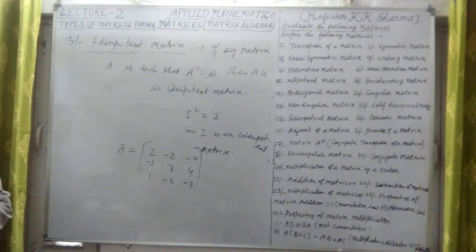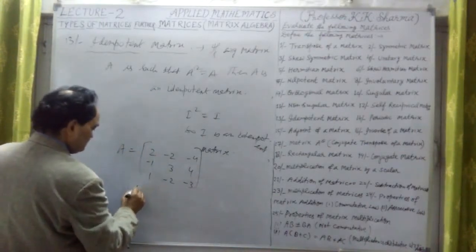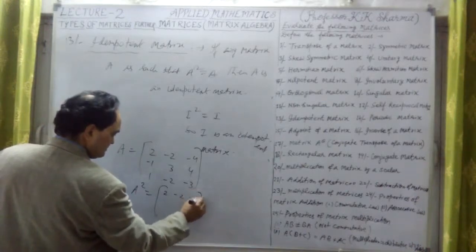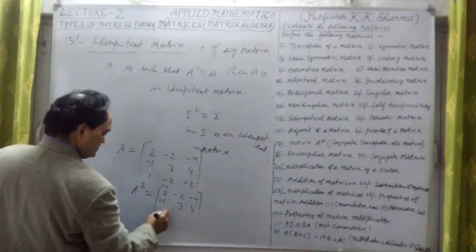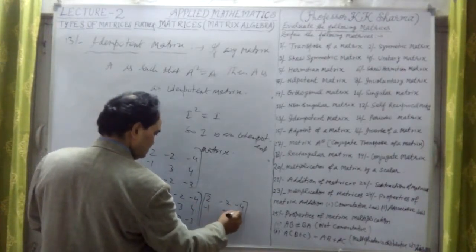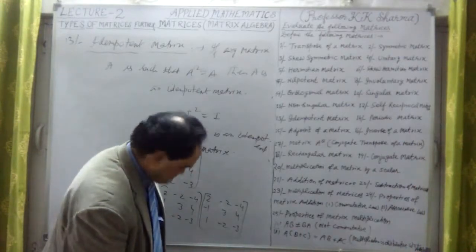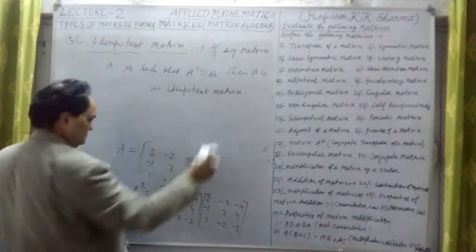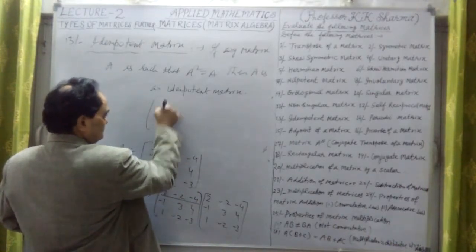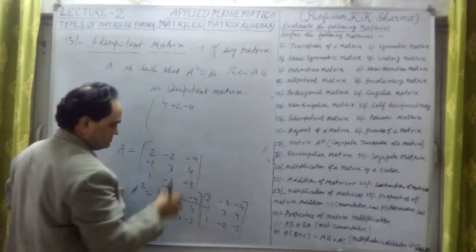Now if I just find out: minus 2, minus 2, plus minus... if I take A here, and now let me find out A squared. Therefore, A squared is equal to A into A. That means this value is 2, minus 2, minus 4, if I multiply them, minus 1, 3, 4, 1, minus 2, and minus 3. If I multiply these two matrices: 2, minus 2, minus 4, this is minus 1, 3, 4 here, this is 1, minus 2, minus 3.